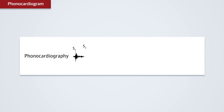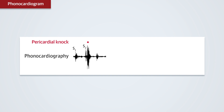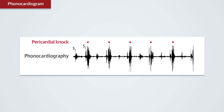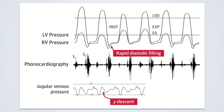The high-pitched early diastolic sound on auscultation is a prominent pericardial knock. The high-pitched frequency distinguishes it from a third heart sound, which is more subtle, low pitch, and occurs earlier. The pericardial knock results from sudden cessation of rapid ventricular filling due to pericardial constraint and coincides with the Y descent on jugular venous contour and the rapid diastolic filling wave in the ventricular tracing.